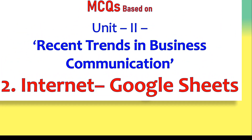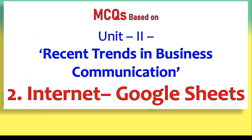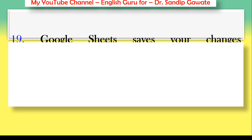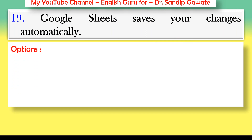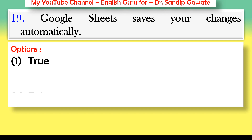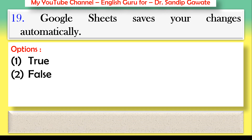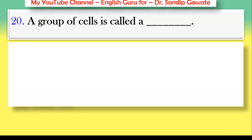The next MCQs are based on unit number two, recent trends in business communication — the topic is Google Sheets. We have studied MCQs based on Google Docs and Google Forms; now questions are based on Google Sheets. Question 19: Google Sheets saves your changes automatically — true or false? The correct answer is option number one — True.